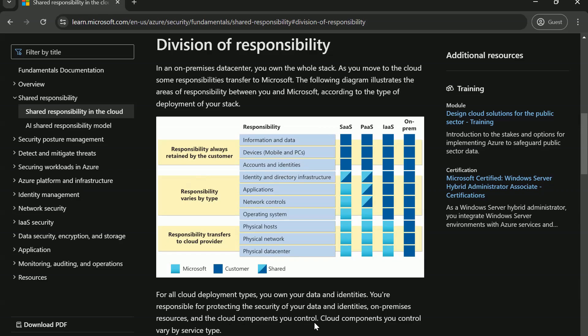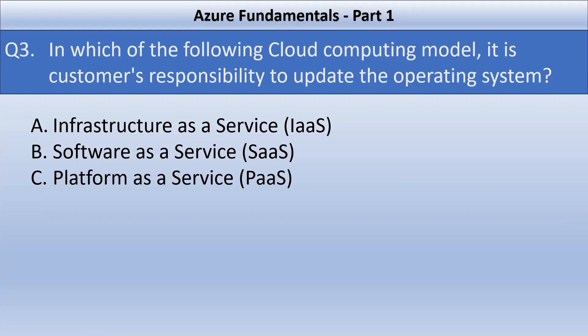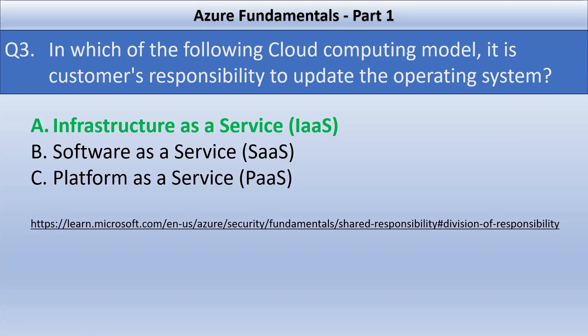Now that we understand the shared responsibility model and how responsibilities vary across cloud computing models, let's head back to the questions. In which cloud computing model is it the customer's responsibility to update the operating system? The correct answer is Option A, infrastructure as a service, because you have access to and are responsible for updating the operating system in IaaS.